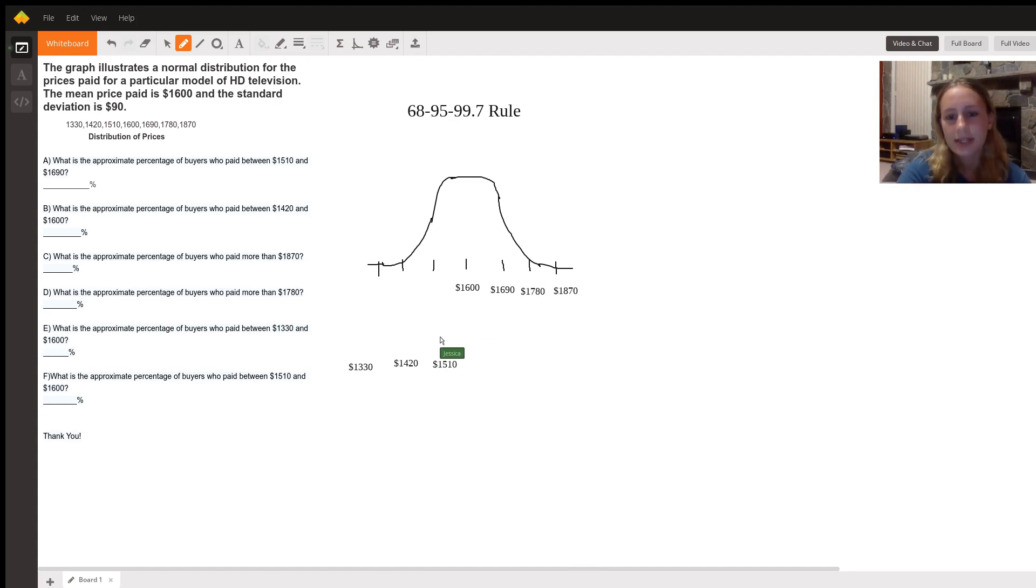$1,600 minus $1,510. So one standard deviation below $1,600 is $1,510. Two standard deviations below is $1,420, and three standard deviations below is $1,330.